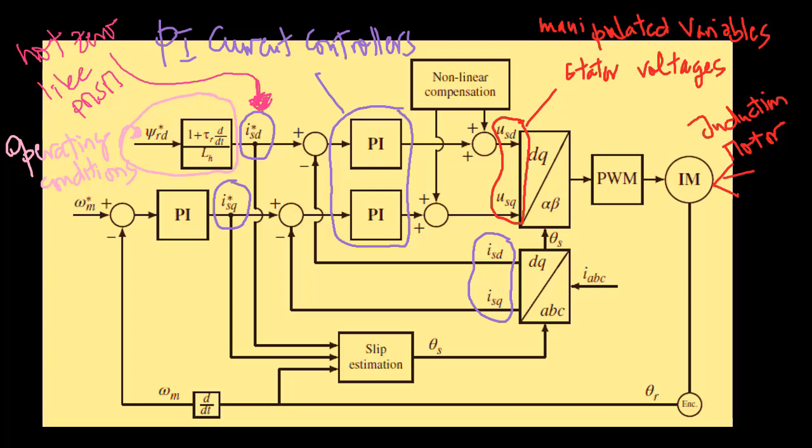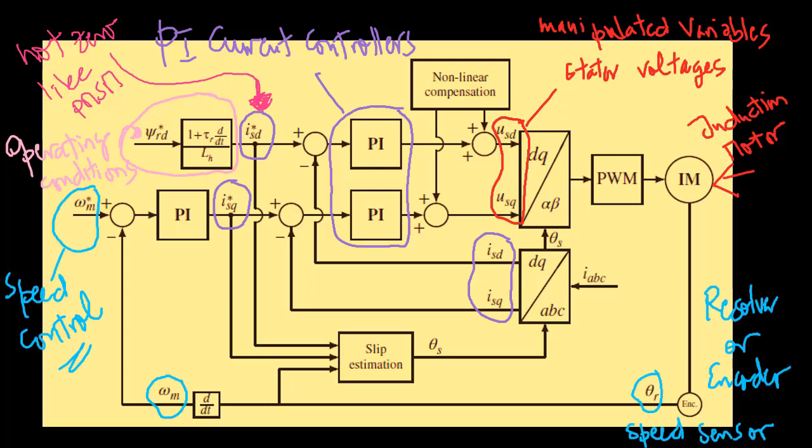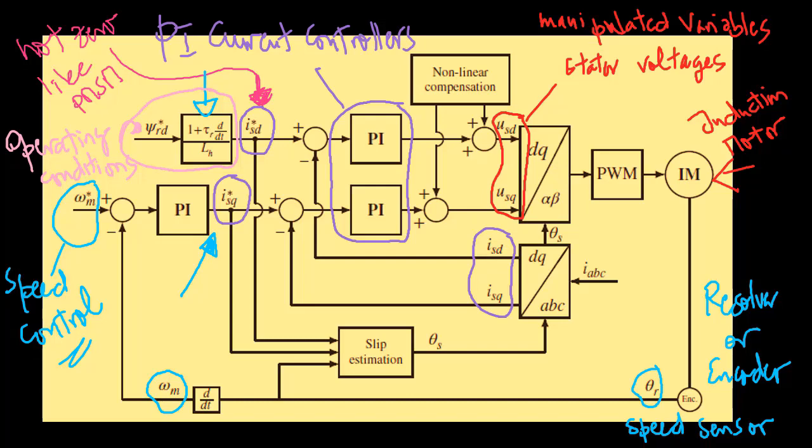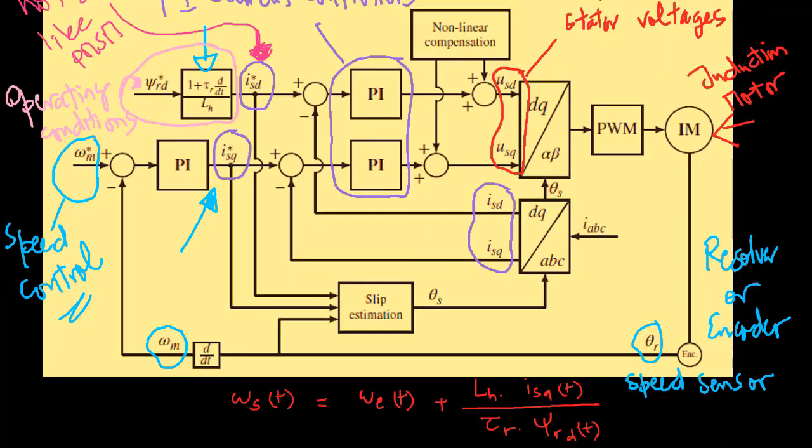If the control objective is to regulate the velocity of the induction motor, it is seen that this objective will be achieved by manipulating the stator current isq while maintaining the rotor flux ψrd as a constant specified as operating condition of the induction motor. The additional complexity of the problem of induction motor control results from the discrepancy between synchronous speed ωs and electrical rotor speed ωe.